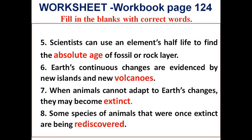Scientists can use an element's half-life to find the 'absolute age' of fossils or rock layers — we have already studied about radioactive elements and their decay to find the half-life. Earth's continuous changes are evidenced by new islands and new 'volcanoes.' When animals cannot adapt to Earth's changes, they may become 'extinct.' And some species of animals that were once extinct are being 'rediscovered.'